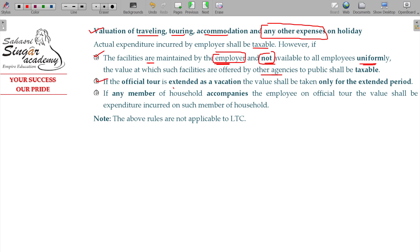Second, if the official tour extended as a vacation, only for the extended period value will be considered as taxable. And if any member of household accommodations, they apply an official tour, the value shall be expenditure incurred by such other member, who will say but it will allow the taxes value.